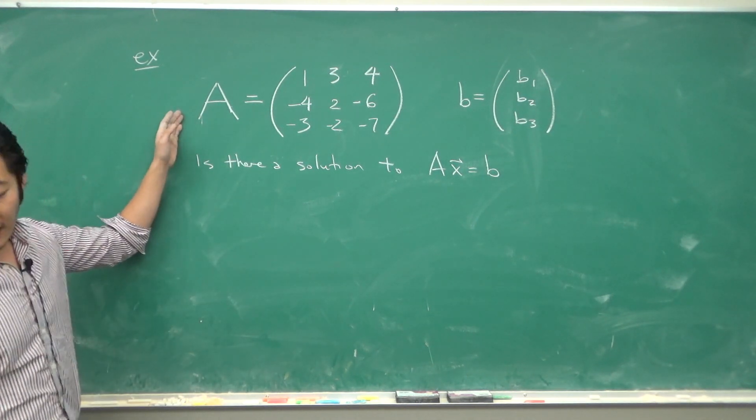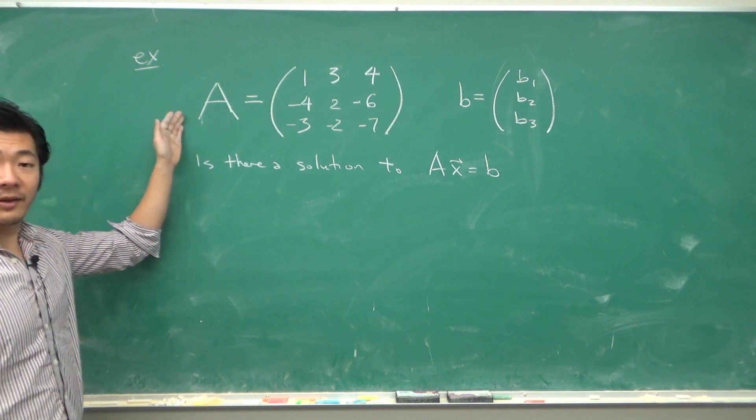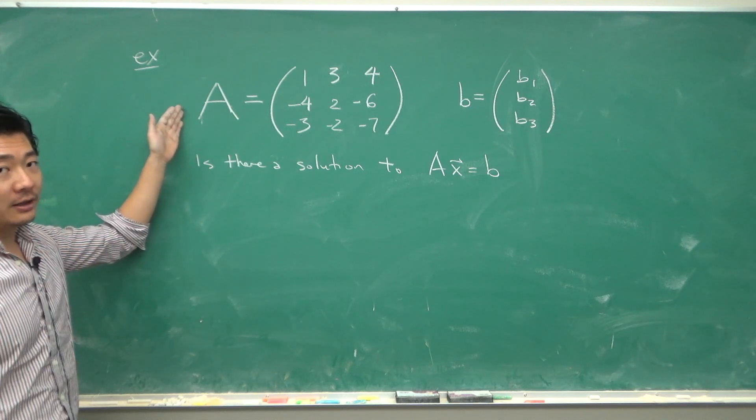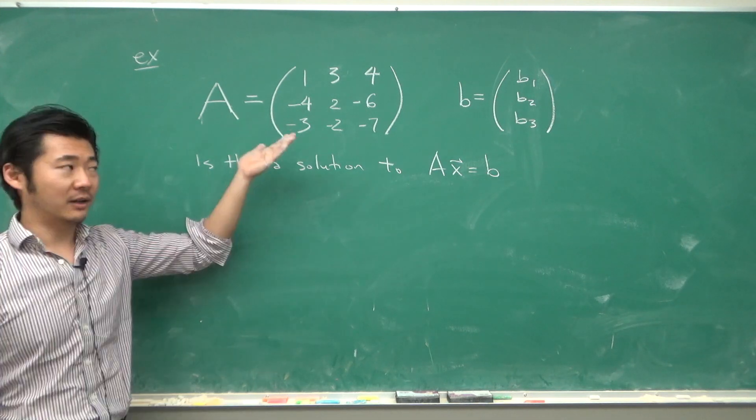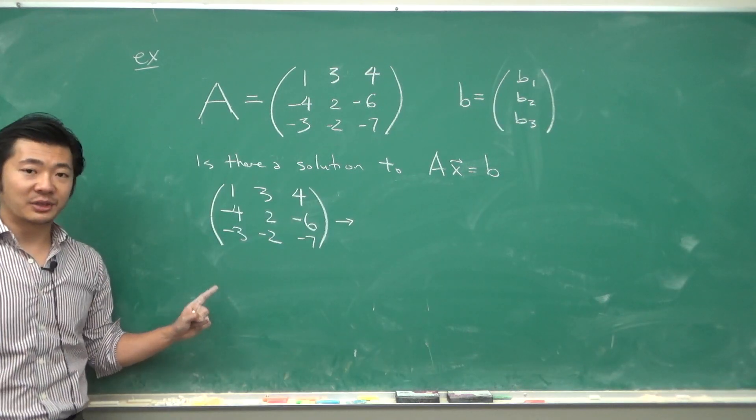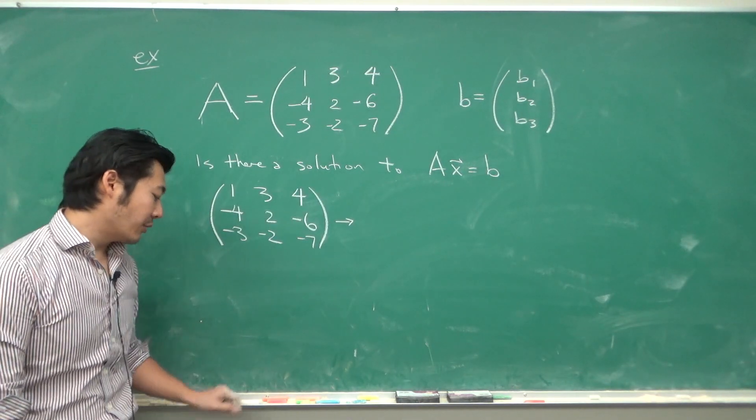And if there is not a pivot position in every single row, then there could be examples of vectors B where a solution does not exist. In order to find the pivot positions, we need to row reduce to at least echelon form.